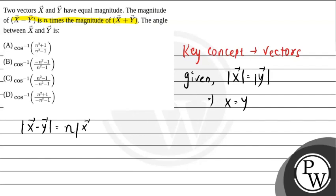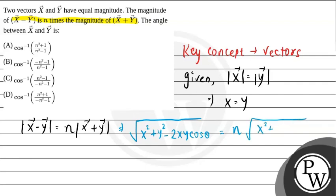And it is given that the magnitude of x vector minus y vector equals n times the magnitude of x vector plus y vector. So we solve this: √(x² + y² - 2xy cosθ) = n · √(x² + y² + 2xy cosθ).